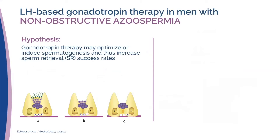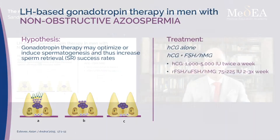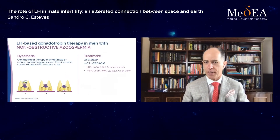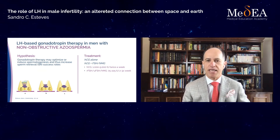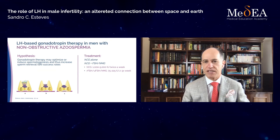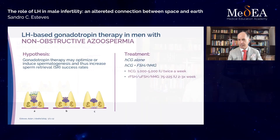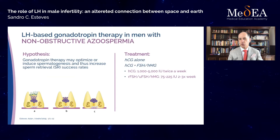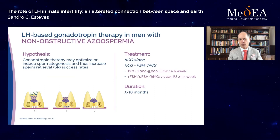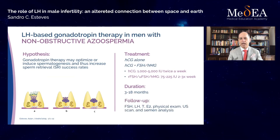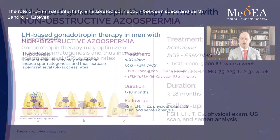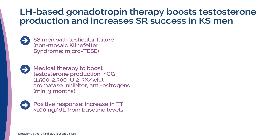Gonadotropin therapy may optimize or induce spermatogenesis and increase sperm retrieval success rates. The treatment explored uses HCG alone or the combination of HCG plus FSH. HCG is usually given twice a week, and recombinant or urinary FSH is given two or three times a week. Duration is two to 18 months, similar to the hypogonadotropic hypogonadism protocol. Follow-up includes hormone levels, physical examination, ultrasound, and semen analysis.